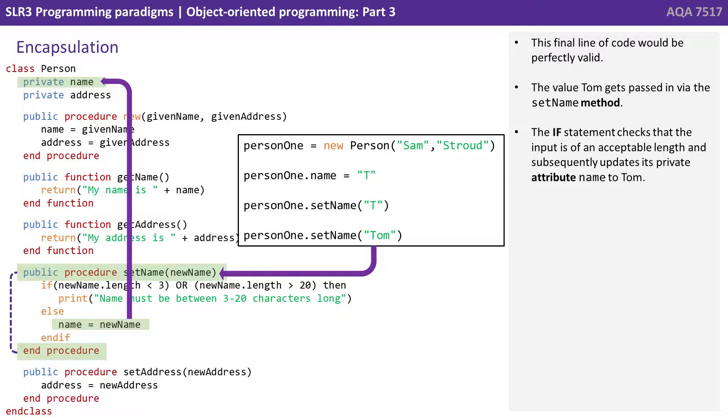This final line of code will be perfectly valid. The value tom gets passed in via the setName method. The if statement checks that the input is of an acceptable length and subsequently updates its private attribute name to tom.